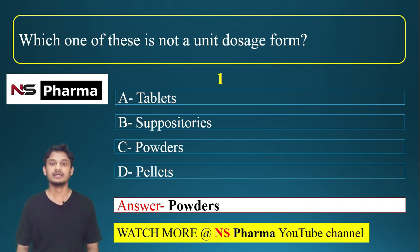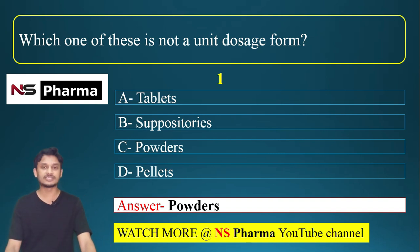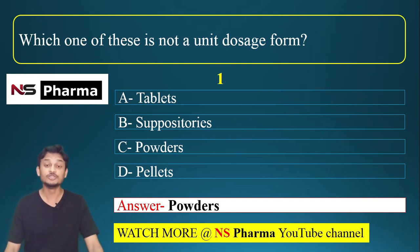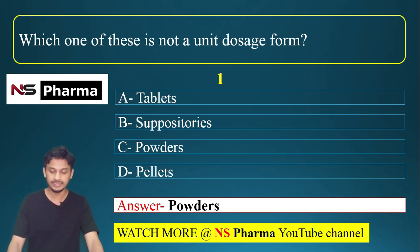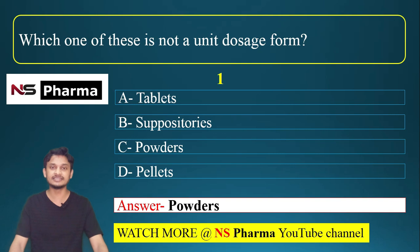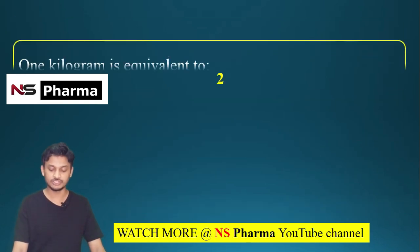Capsule is another example of a unit dosage form. Other examples include lozenges, suppositories, pessaries, and sachets — all are unit dosage forms. In this question, options A, B, and D are unit dosage forms. Option C, powders, is a bulk dosage form.